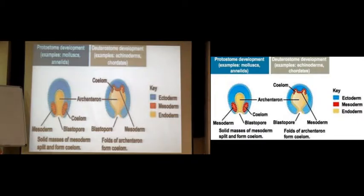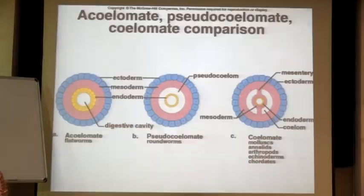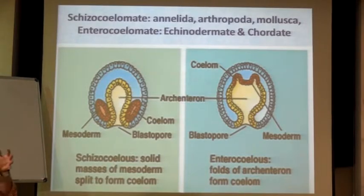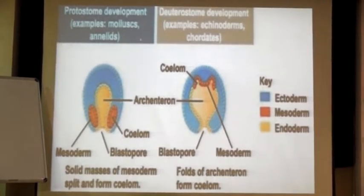It has a lot to do with your division at the embryological level — whether they are having the coelom the way we consider coelom to be, and that is why there is a difference. The development of schizocoelmates is different from the development of enterocoelmates. Because of this reason, there is a difference of opinion between scientists. Few scientists believe that since the coelom forms differently, you need to separate organisms into schizocoelmates and enterocoelmates.